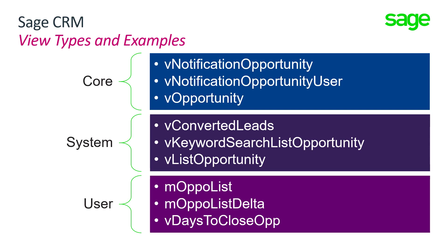Views fall into three different types. First, core views are fundamental to the operation of the system and cannot and must not be altered. Then there are system views, which we strongly recommend you do not change because they are used by the system — changes may adversely affect system behavior. There may be some system views you want to change in certain circumstances, but generally when customizations are being carried out, such as a new gadget, you'd want to create your own new view. Anything created by the system administrator is a user-defined view, which you have full control over.